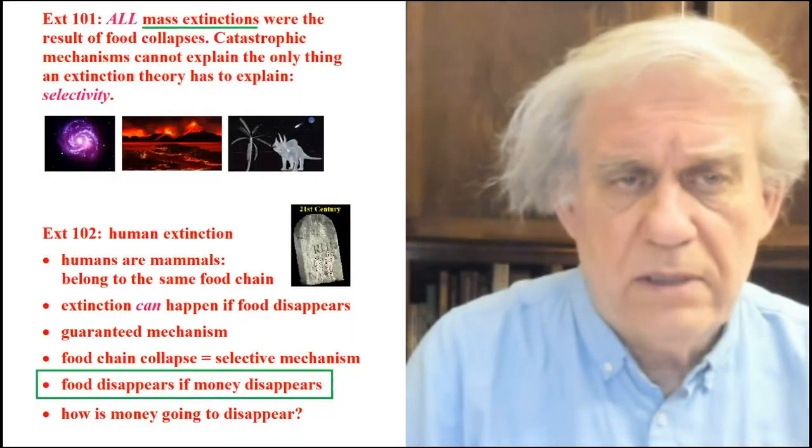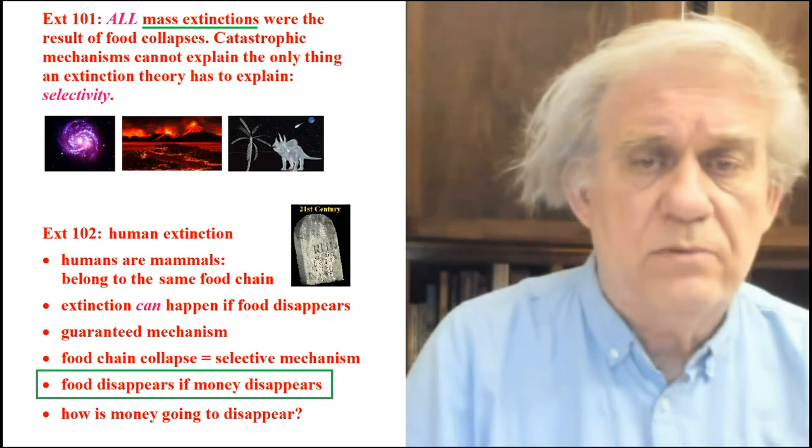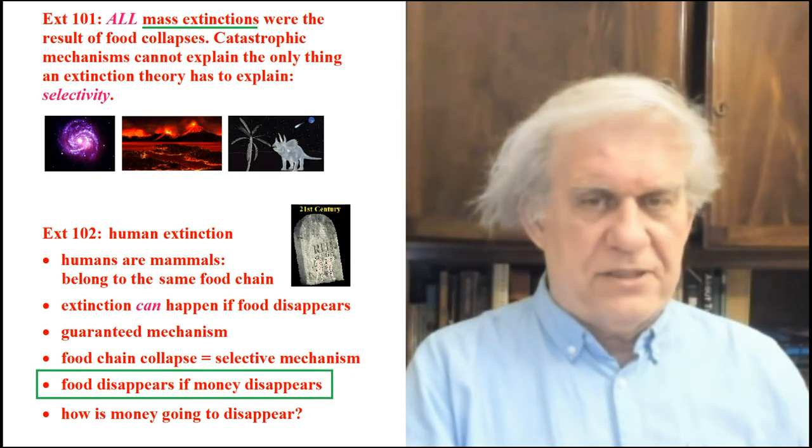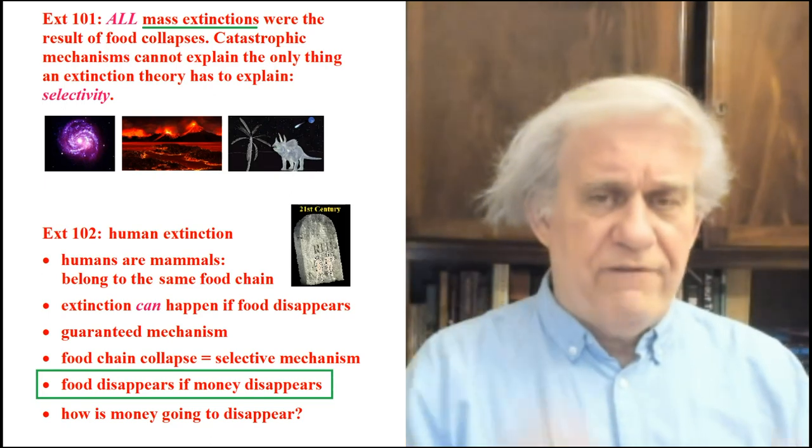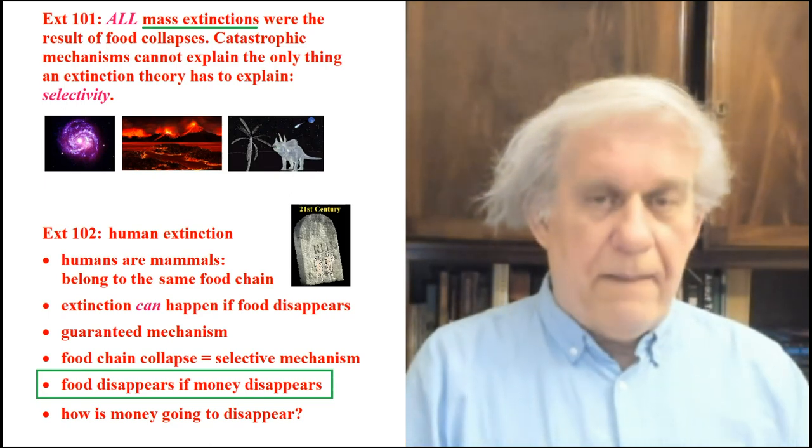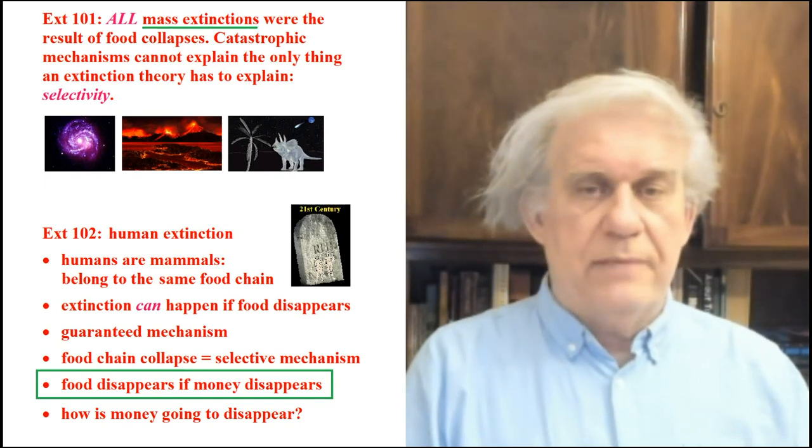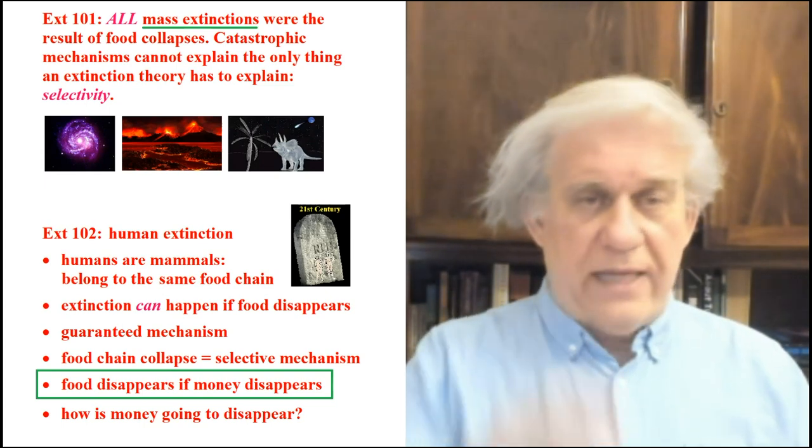Anyways, I encourage people to do extinction 101 before they do extinction 102, meaning you want to do mass extinction first. Very few people tackle mass extinction. They want to do human extinction. Everybody's an expert at human extinction. I yet, I have yet to find people who are experts in mass extinctions that occurred already, which is what a theory is supposed to explain. You have to explain how the animals in the past died, disappeared.